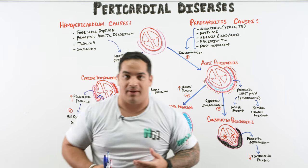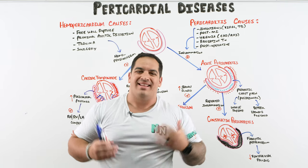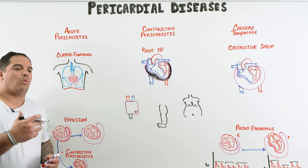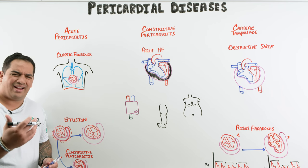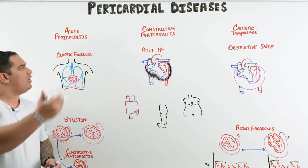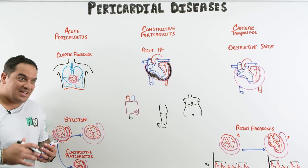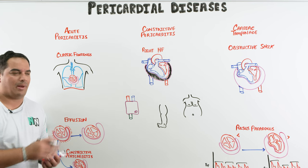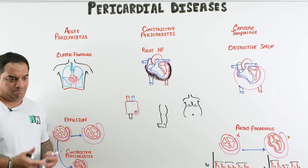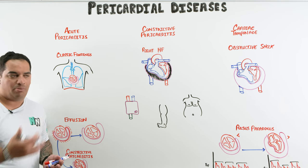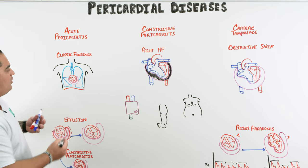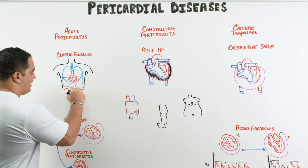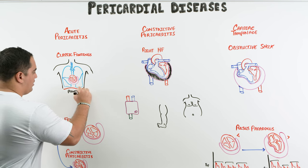Now let's talk about the complications and clinical findings. Acute pericarditis doesn't have major scary complications on its own. The most classic finding is pleuritic chest pain — when the pericardium is inflamed. It's positional: worse when supine (diaphragm pushes up against the pericardium) and improved when sitting or leaning forward (diaphragm drops, offloading the pericardium).